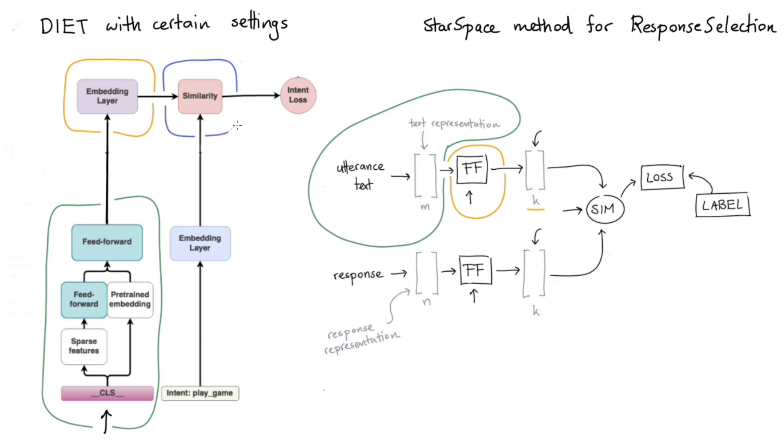And after that, we are passing it to a similarity calculation. And we see that both in the DIET configuration as well as over here in our StarSpace method. So so far, this is looking very similar. But let's now zoom in on the representation for the response.